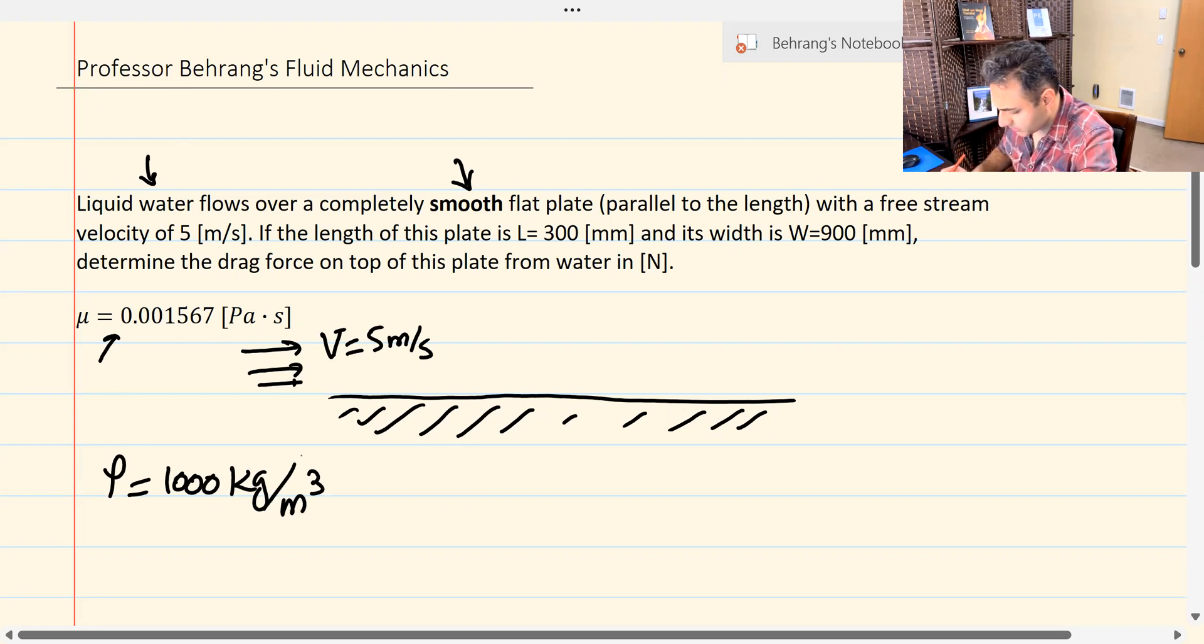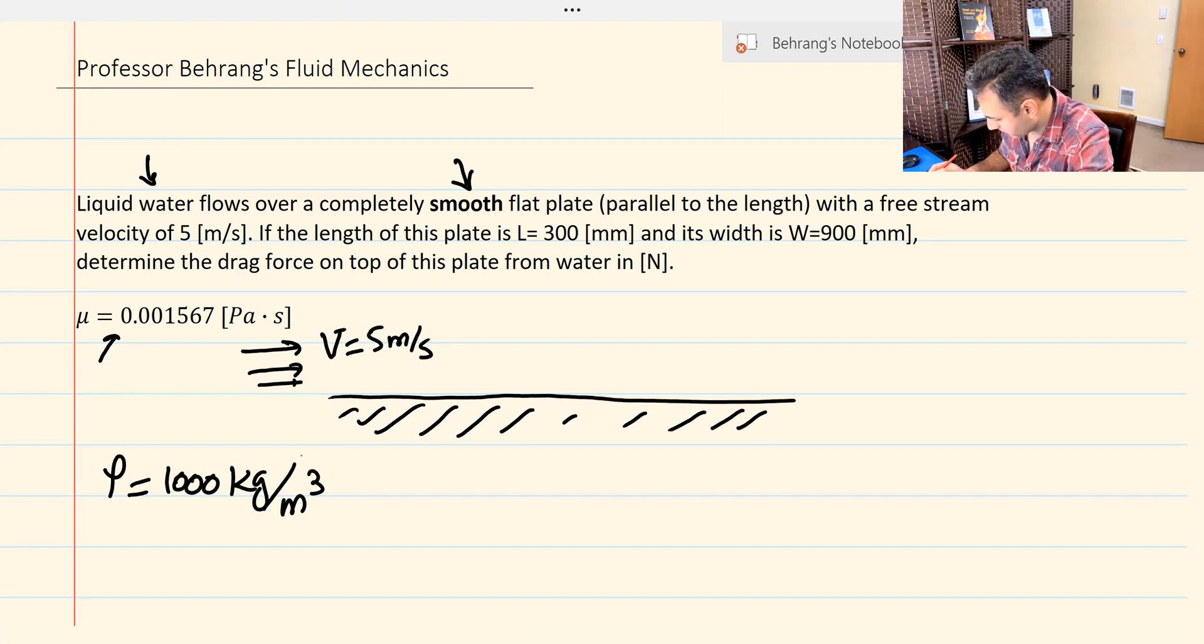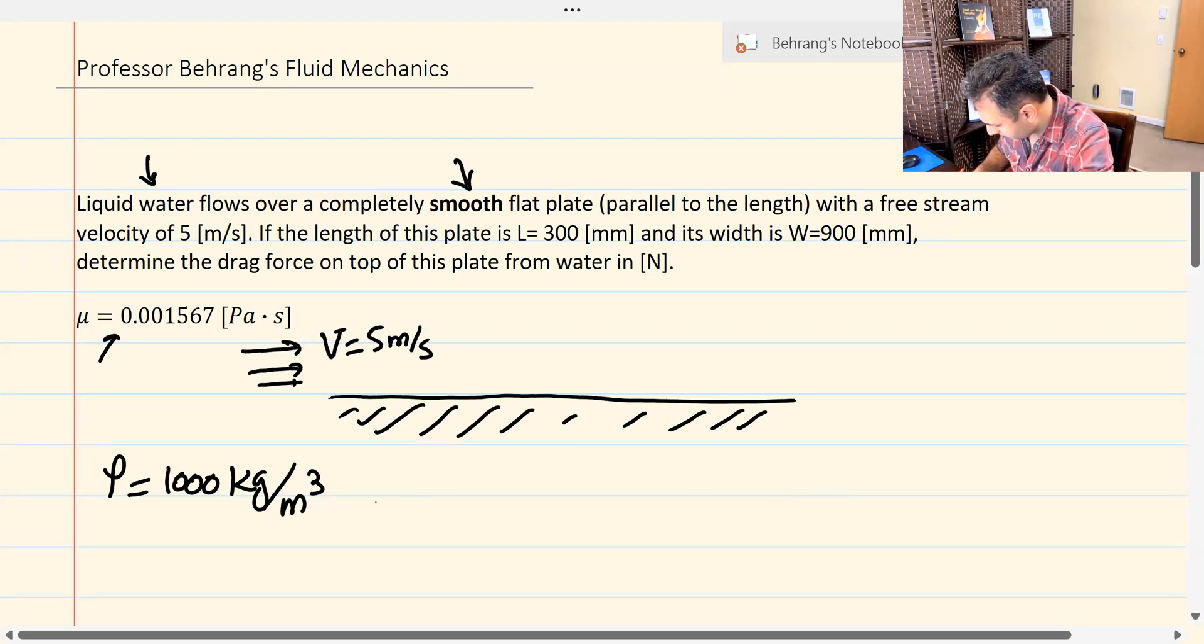This is probably water at four degrees Celsius. Judging by the viscosity given, it should be water at four degrees Celsius. And its density would be 1,000 kilograms per meters cubed. What are we looking for?